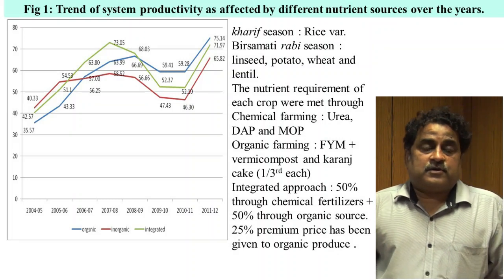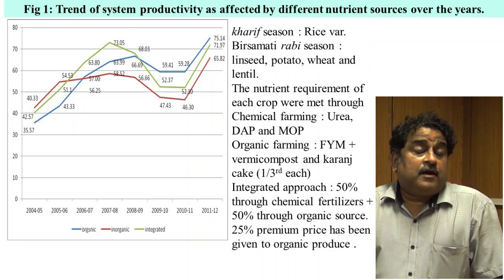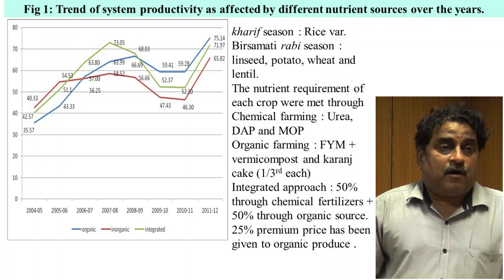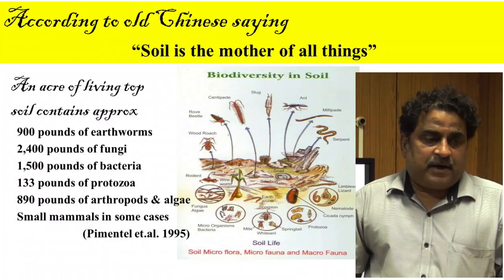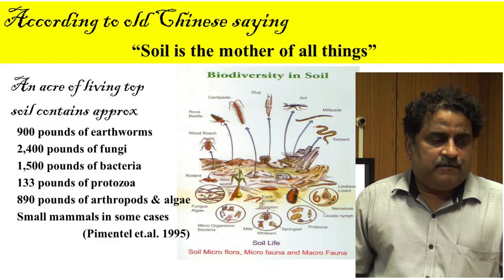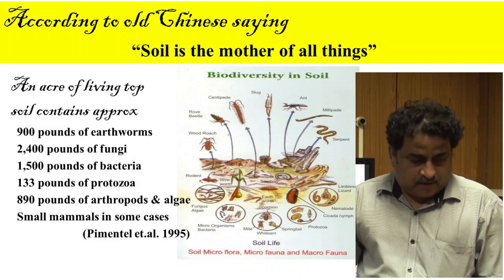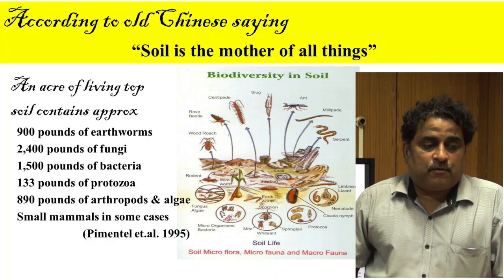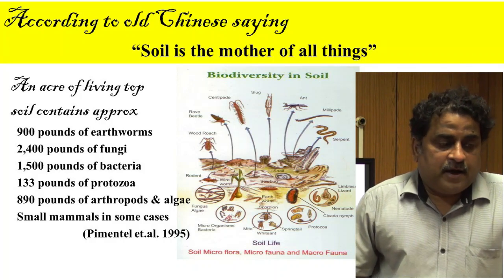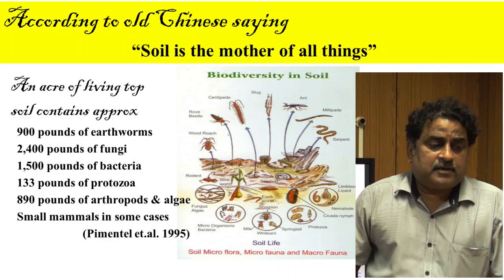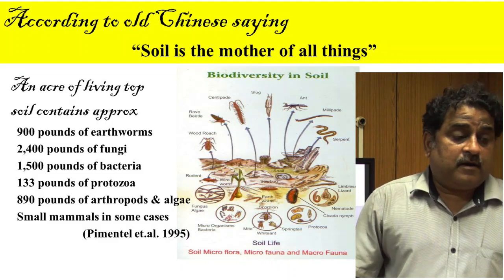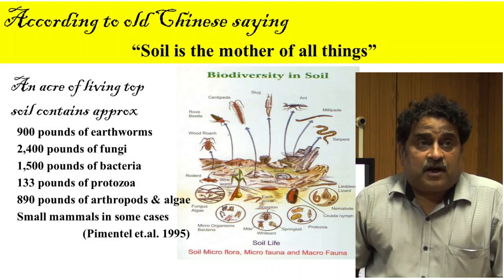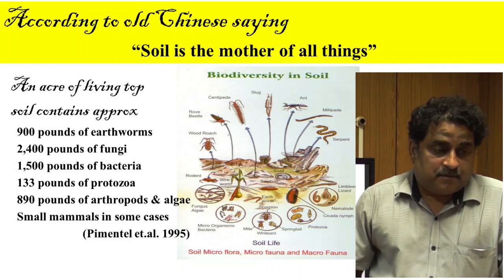Production will naturally be much higher after the conversion period if nutrients are supplemented based on the nutrient requirement of the crop. As scientist Pimentel et al. noted, an acre of living topsoil contains about 900 pounds of earthworms, 2400 pounds of fungi, 1500 pounds of bacteria, 133 pounds of protozoa, 890 pounds of arthropods and algae, and small mammals in some cases.